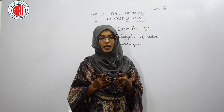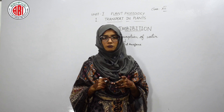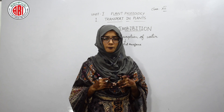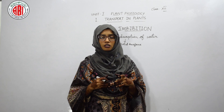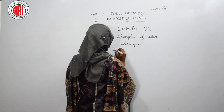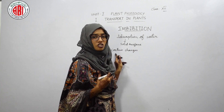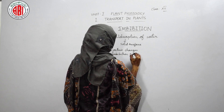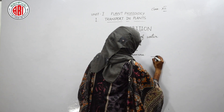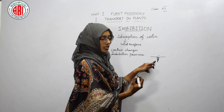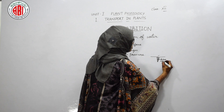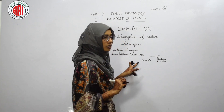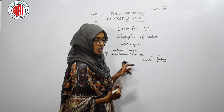Common examples of imbibition include: soaking seeds in water — the seeds imbibe water and swell up. Another example is that during rainy season, wooden doors swell up due to imbibition. Imbibition also generates pressure called imbibition pressure. When a dry seed falls in a thin crevice of rock during rain, the seed imbibes water and swells up, generating up to 1000 atmospheres of pressure, which is enough to widen the crack and helps in soil formation.